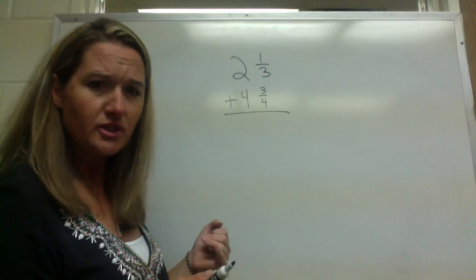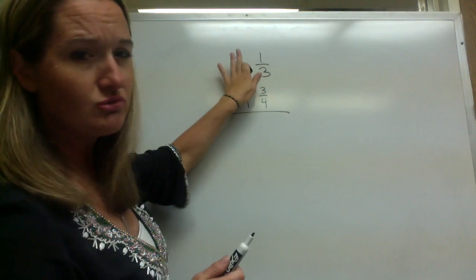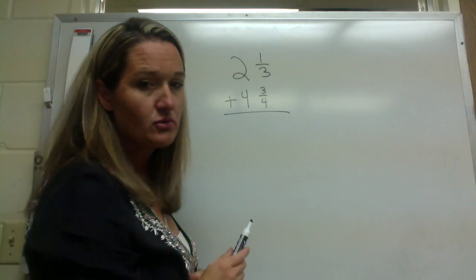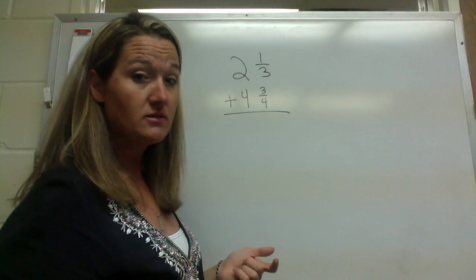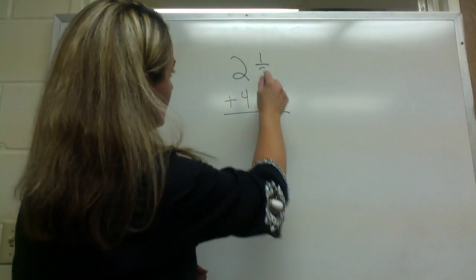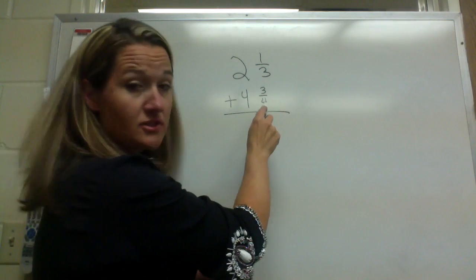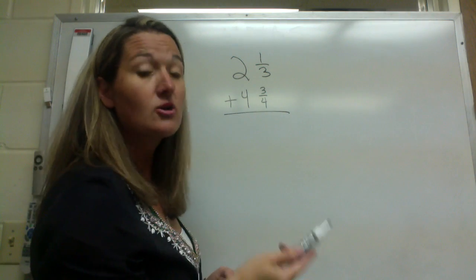We really need to focus on the fractions right now. Let's just ignore the two and the four right now. So we're going to add one-third and three-fourths. If you watched the last lesson, you should know how to do that, hopefully. Can we add them just the way they are? No. They have different denominators, so we have to get a common denominator.